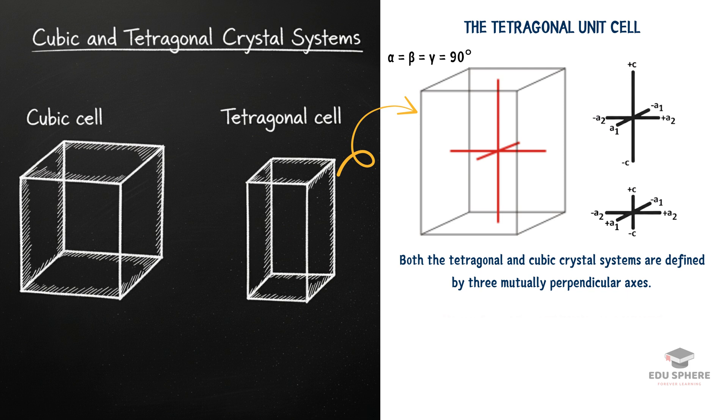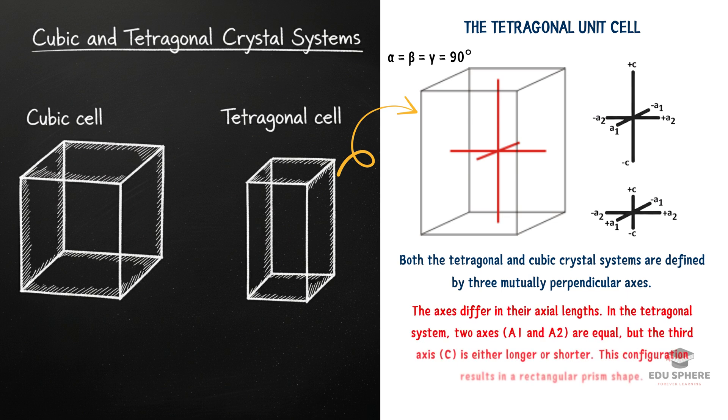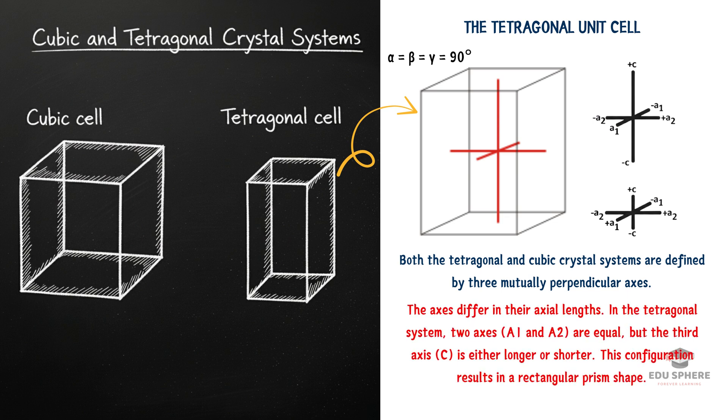But here is the crucial difference. While the two horizontal axes, which we call a1 and a2, are still equal to each other, the vertical c-axis now has a different length. It can be either longer or shorter than the horizontal axis.